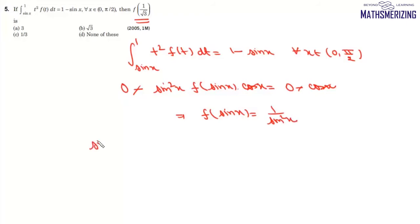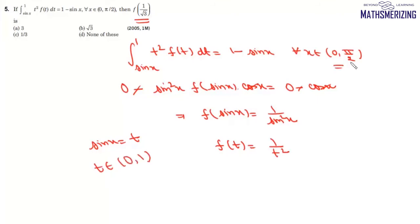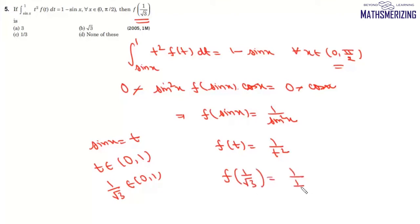Minus and minus cancel, and cos x also cancels, so we get f(sin x) = 1/sin²x. Now if we take sin x = t, we can write f(t) = 1/t², provided t belongs to (0, 1) because x belongs to (0, π/2). We need to find f(1/√3), which is 1/(1/√3)² = 3. So the answer to this question is 3, and that's your option A.